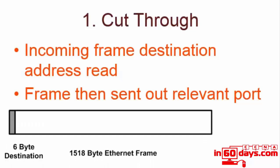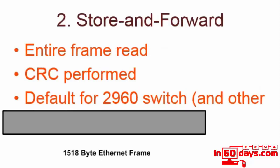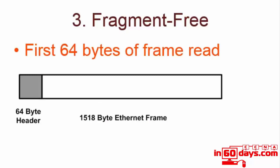Store-and-forward reads the entire frame, performs a cyclic redundancy check, and then sends the frame on — this has the highest latency. However, the Cisco 2950 and 2960 switches, which are what you're tested on, now use store-and-forward because technology has improved and it balances latency against delivering uncorrupted frames. Fragment-free reads the first 64 bytes of the frame, because it has been found that if there is going to be an error in the frame, it's normally in the first 64 bytes.